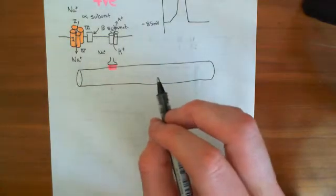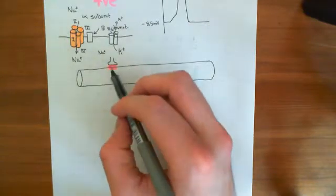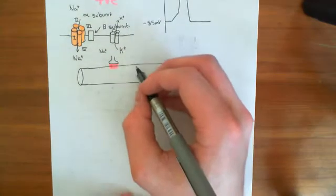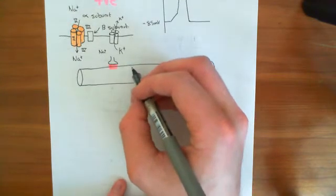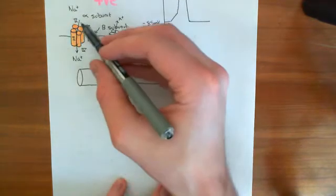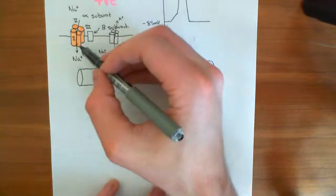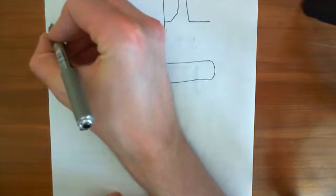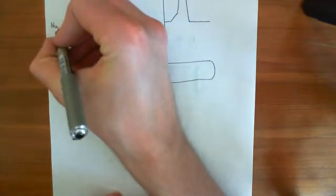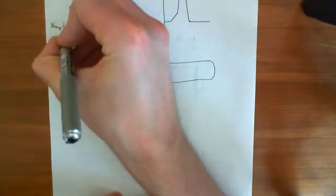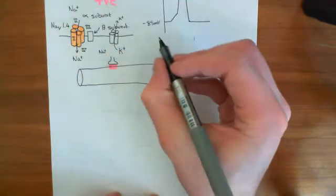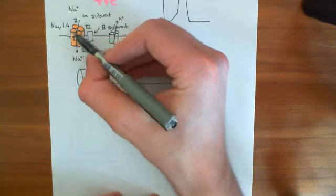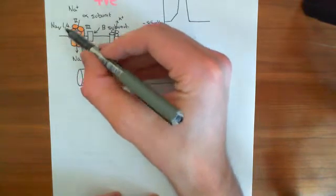The way it's going to work is that when these voltage-gated sodium channels open — and a little bit of extra information: the specific voltage-gated sodium channels found in skeletal muscle are NAV1.4. So the alpha subunit of the voltage-gated sodium channel is encoded by the gene NAV1.4.